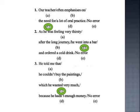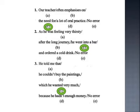For the third question: 'He told me that he couldn't buy the paintings which he wanted very much, because he hadn't enough money.' The answer is C. The clause 'which he wanted very much' is in simple past tense, but it shows an earlier time. Therefore, you have to use past perfect tense: 'which he had wanted very much.' So the corrected sentence is: 'He told me that he couldn't buy the paintings which he had wanted very much.'